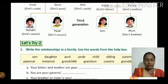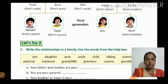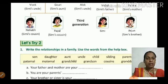Third generation includes: Rishabh, Simi's cousin; Payal, Simi's cousin; Simi herself; and Arjun, Simi's brother.